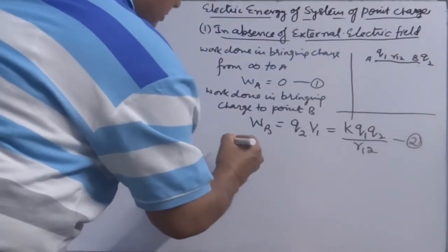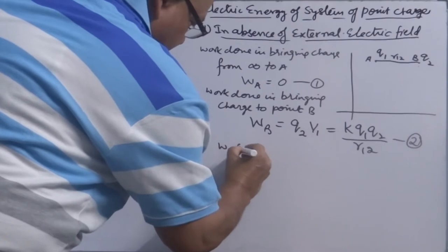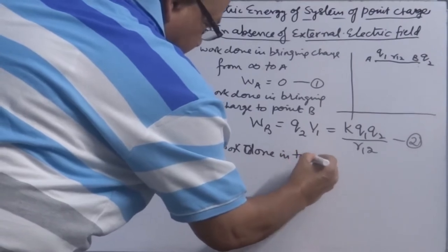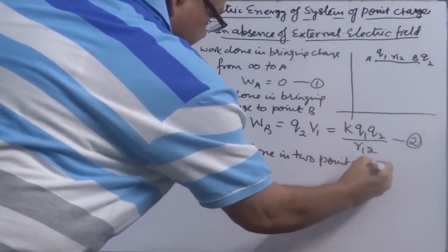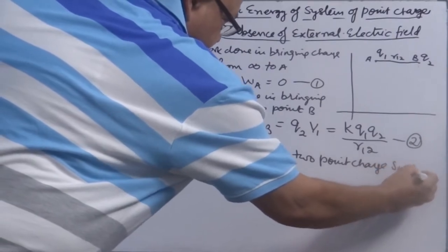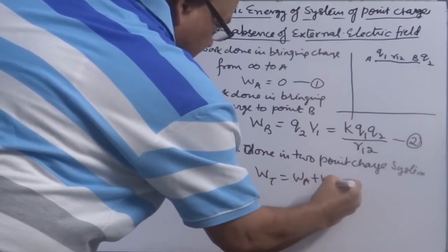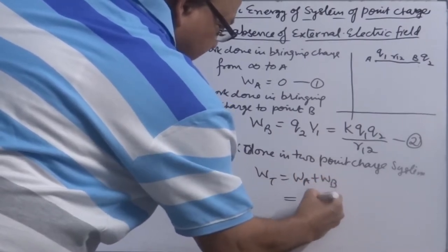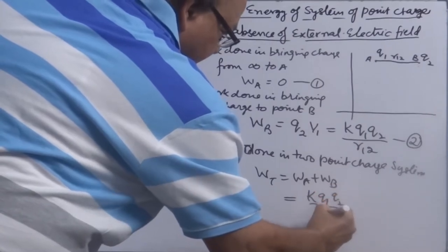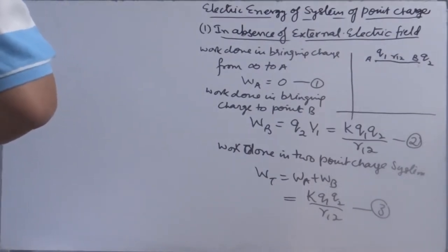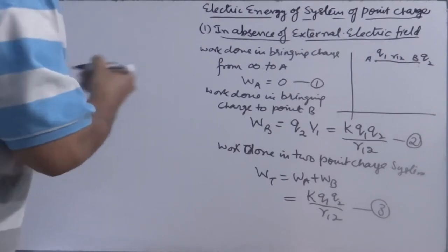Total work done in two point charge system. How much it is? W total is equal to WA plus WB that is K Q1 Q2 over R12. So if you want to build up two point charge system, then this much work is required to do. But we keep on adding charges and accordingly the amount of work then keep on increasing.